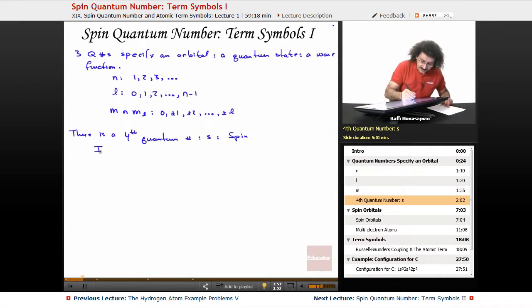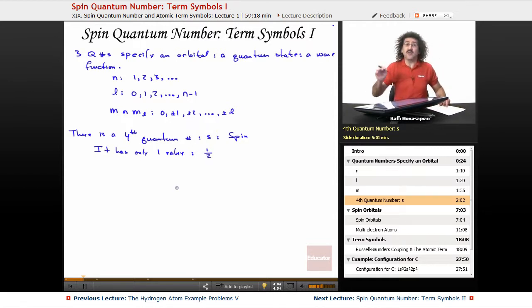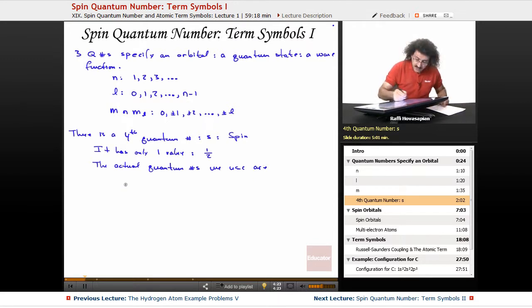It has only one value. Now, it has only one value for the electron, and that is one-half. The actual quantum numbers we use and that we often see are the m sub s. Sort of like l and m sub l, we have s and we have m sub s. Now, this is the one that has the two values that you've probably seen before, the plus-one-half and the minus-one-half, for up-spin and down-spin, respectively. So these are the spin quantum numbers.